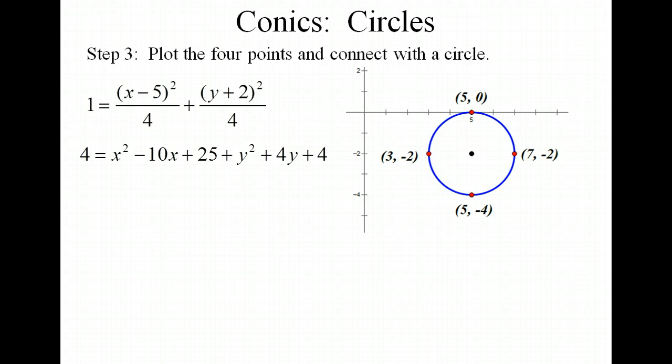Okay, let's go ahead and rewrite this one in the standard form, where we're clearing out our fractions and setting it equal to 0. So we foiled out (x - 5)² and (y + 2)², and we multiplied through by 4 to clear fractions. And now you want to set it equal to 0. So you have this equation. And notice again that our a and c values are equal, and they're 1.